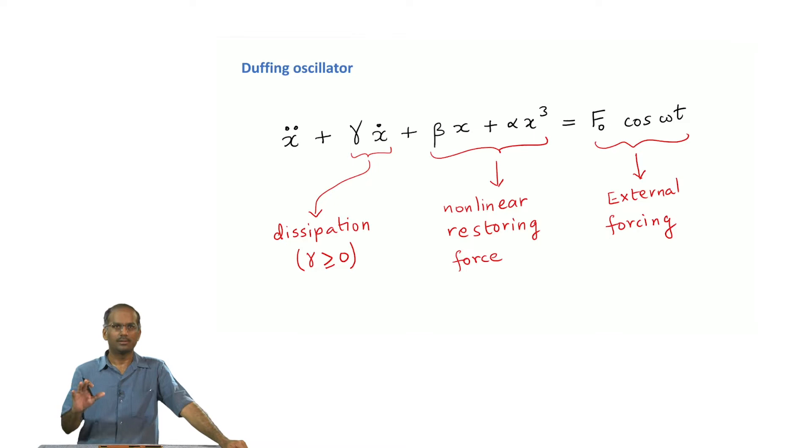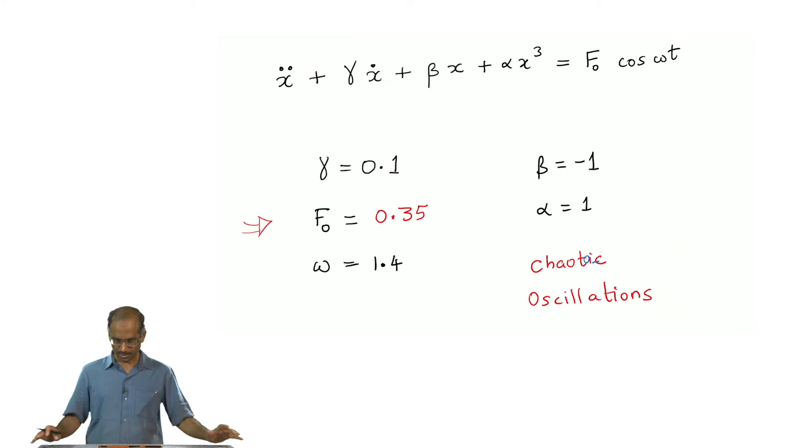We worked out another model called the Duffing oscillator. Here again you see these three important ingredients: you had dissipation, you have non-linear restoring force and an external forcing. External forcing is a sinusoidal forcing with frequency ω. In this case, while you can see many things, the biggest highlight is that it can lead to chaotic solutions for certain choices of parameters.